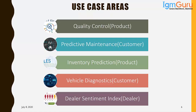Then there is inventory prediction. You have tie-ups with your OEMs — tier 1, tier 2, tier 3. How do you know which item in your inventory is going to get exhausted? If a particular item is unavailable, wait time for selling a car increases, negatively affecting customer experience. You can predict and maintain an optimum level of inventory with respect to your OEM suppliers using time series analysis, which is another part of machine learning algorithms.